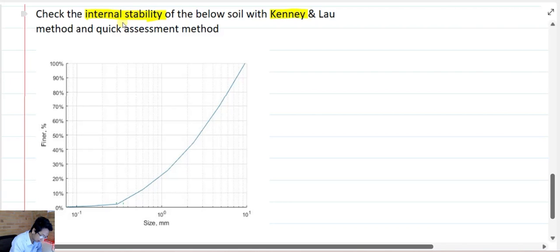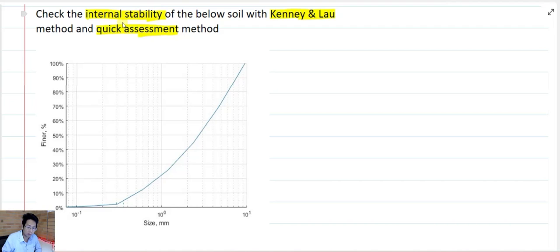The first one is the Kenny and Law method and the second one is the quick assessment method. You can use either of these when you don't have the ability to test your soil in the lab. I strongly recommend, if you want to design something and want to check the soil internal stability, please send it to a laboratory and test it.